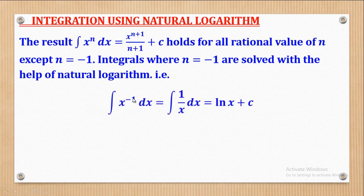When we want to integrate x to the power negative 1, or 1 over x — noting that from indices x to the power negative 1 is the same as 1 over x — the answer will be the natural log, written as ln x. So the integral of x to the power negative 1 is equal to ln x plus c. Don't forget the constant of integration.